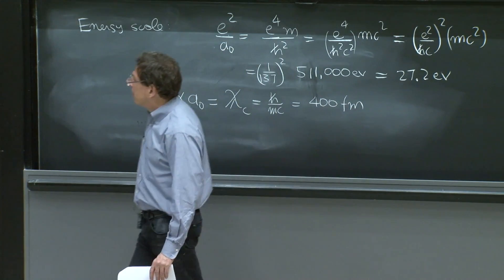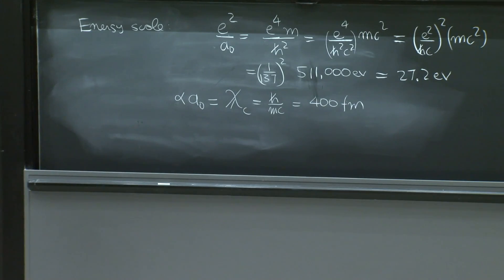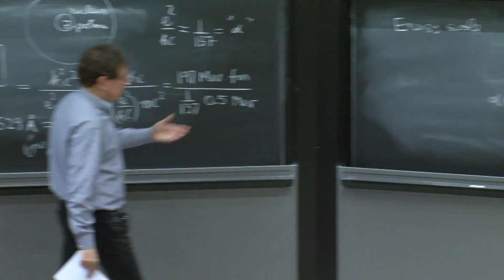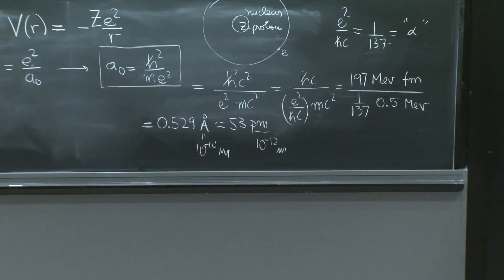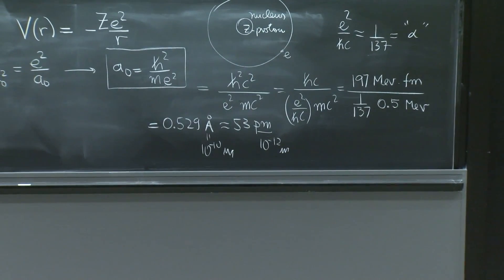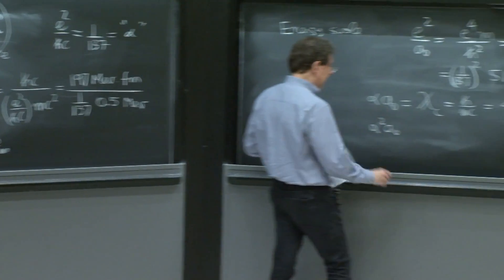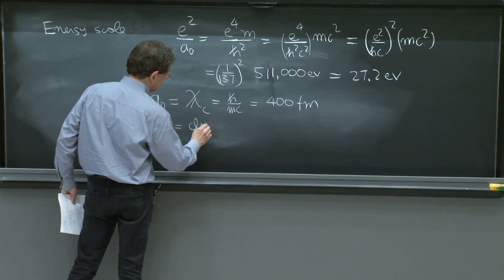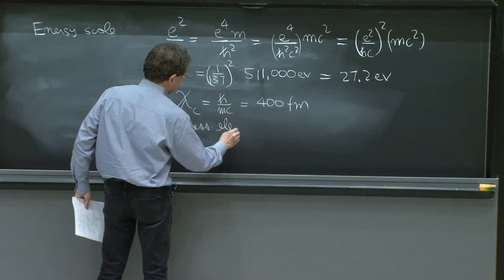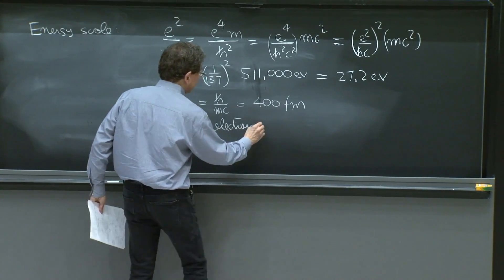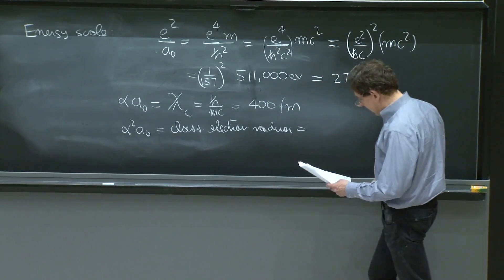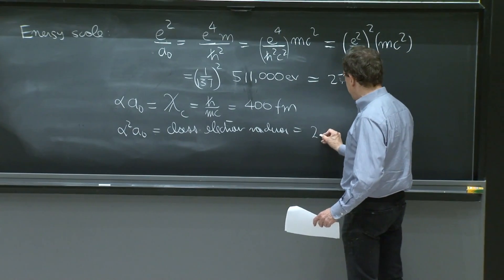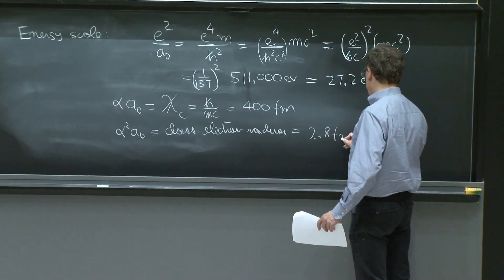It's already much smaller than the Bohr radius. It's smaller by 137 from the Bohr radius. And then if you do alpha squared a0, that actually was the classical electron radius. So you must divide this by 137 again. And it gives you about 2.8 Fermi.